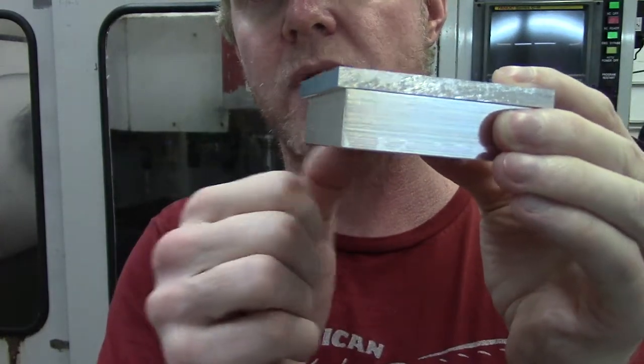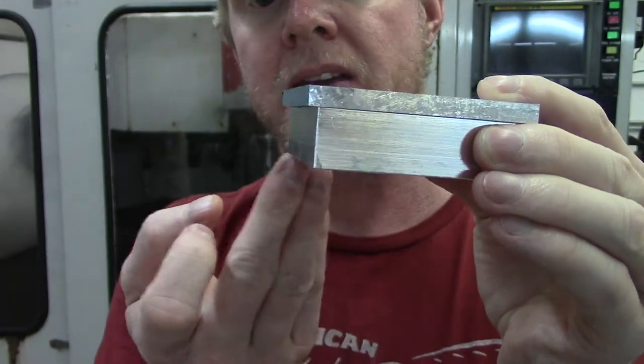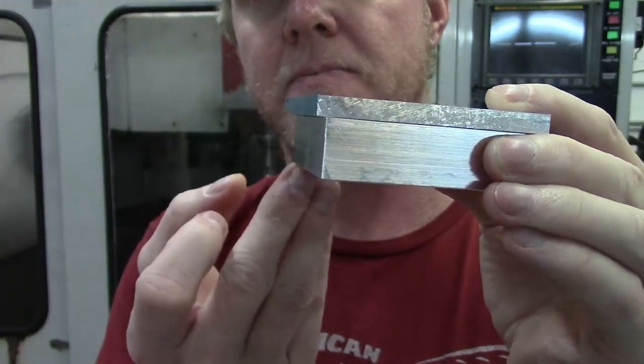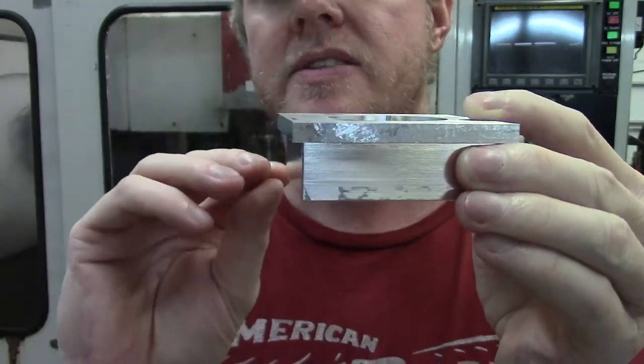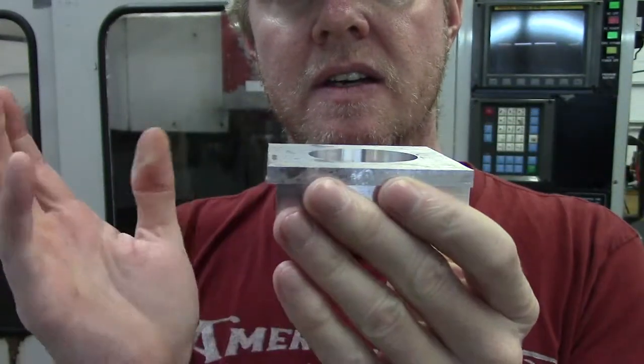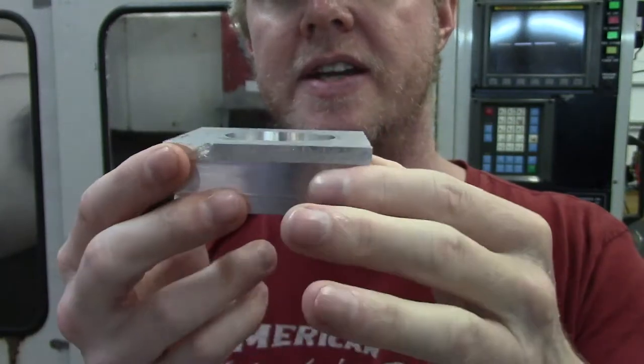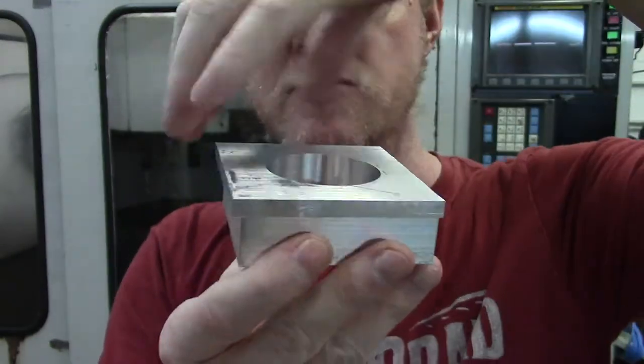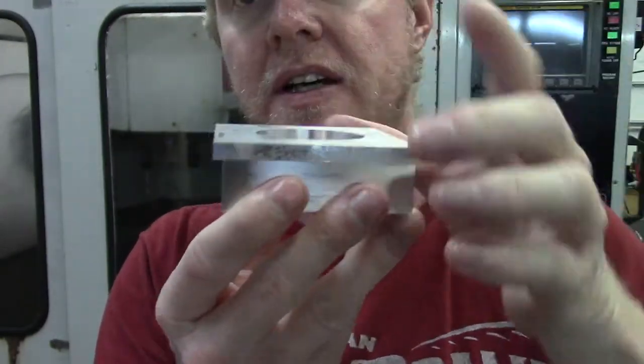So basically this rear back here will be the fixed jaw and the bottom of this would be the parallels that I put underneath. So that'll get us a fixed corner that's based off of the model and not the stock. So a little bit different setup and that's what we're going to do the final removal of all this extra material hopefully.